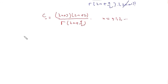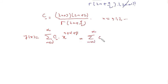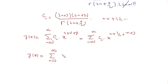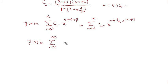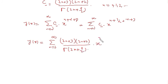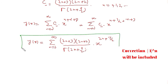With this value of c_n, the assumed solution y(x) = sum from n=0 to infinity of c_n x to the power n plus alpha plus beta becomes: sum from n=0 to infinity of c_n x to the power n plus 1/2 plus (n+3), which simplifies to x to the power 2n plus 7/2. So y(x) = sum from n=0 to infinity of (2n+3)(2n+2) over gamma(2n plus 9/2) times x to the power 2n plus 7/2. This infinite series converges for all x with 0 less than x less than infinity.